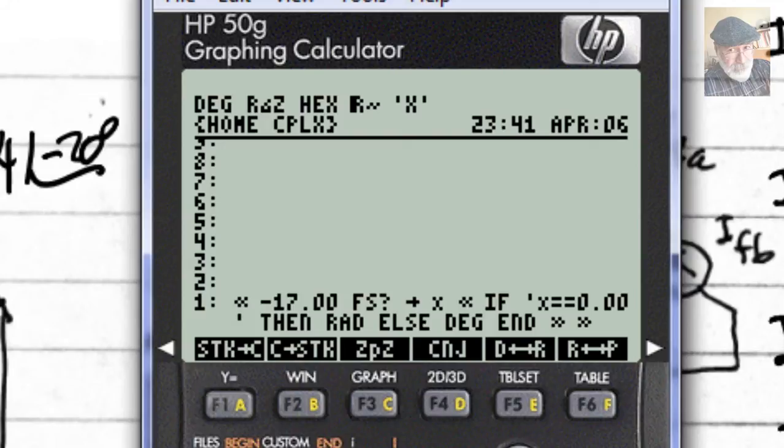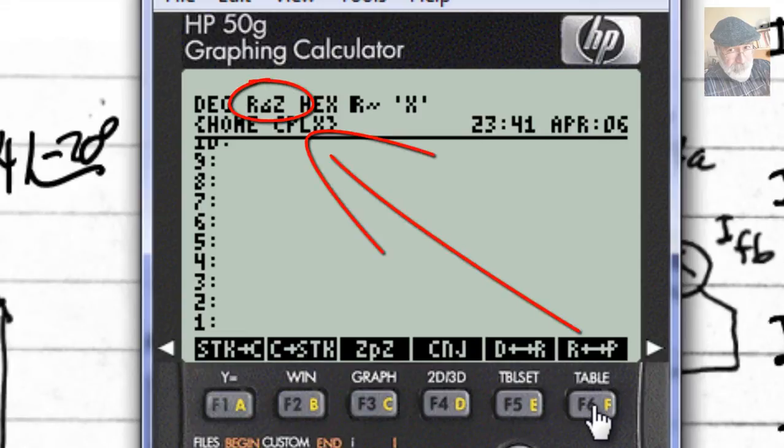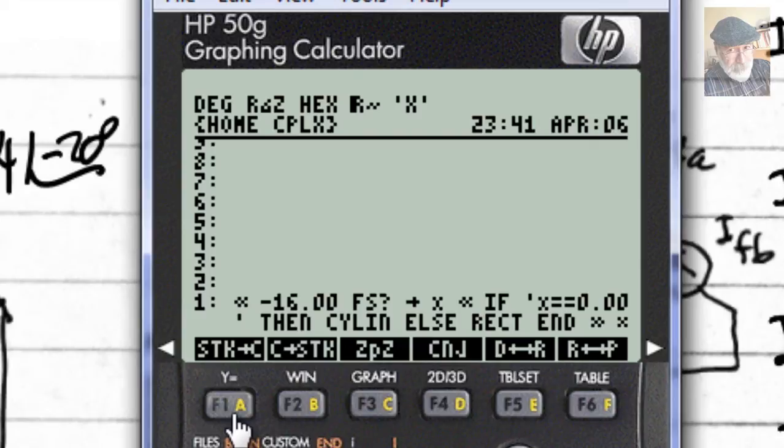Assign that to one key if you wish to do so. And I also have a toggle between rectangular and polar. Rectangular and polar. That little program is just one that uses the system flag, negative 16. And that is all there is to it.